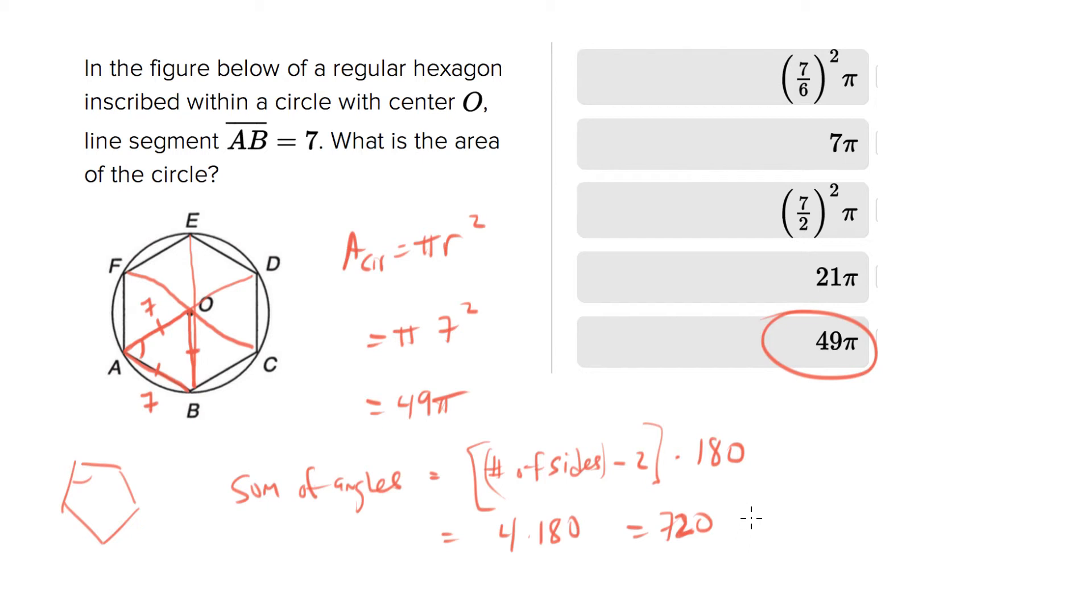If you take 720 and you divide that by six, that's the sum of all the angles, but in a hexagon there are six angles. So if you take 720 divided by six, what you will get is 120. So they say it's a regular hexagon. A regular means all the angles are the same. So you take 720 divided by six and you get 120. So that tells you 120 is the value of this angle right here.